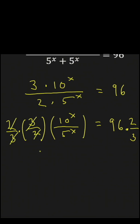So on the left, we're left with 10 to the x divided by 5 to the x. And on the right, 96 divided by 3 times 2 is 64.